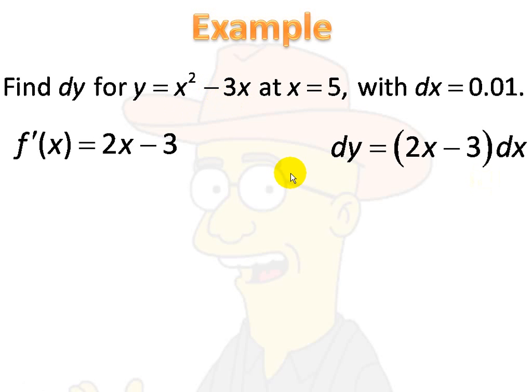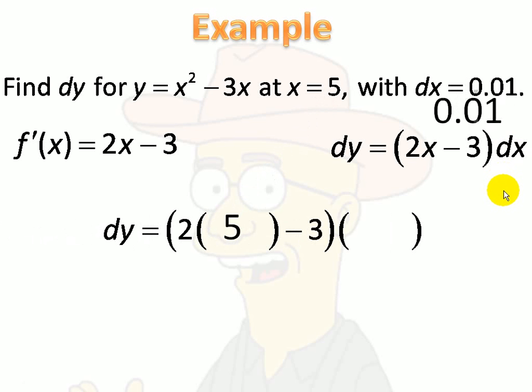Okay, now dy is equal to 2x minus 3 dx. And of course, I'm going to need to plug in the value for x and the value for dx. Okay, so we've got 5 goes in the x, 0.01 goes in the dx. Gives us 0.07.